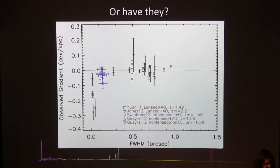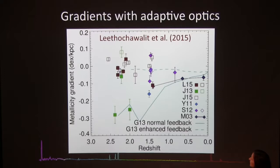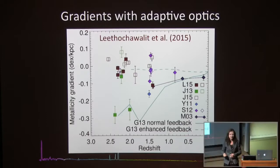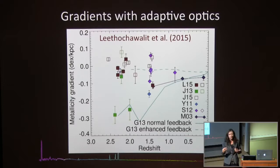Many galaxies have now been measured with adaptive optics. The AO-measured galaxies show all sorts of gradients — a few steep ones but also a lot of flat ones. Solid points are rotation-dominated, spiral-ish galaxies; unfilled points are dispersion-dominated galaxies, some clearly in mergers. The effect of environment is really key to understanding metallicity gradients in high-redshift galaxies. We know from local galaxies that mergers flatten metallicity gradients, and this is probably what's happening in many of these cases.